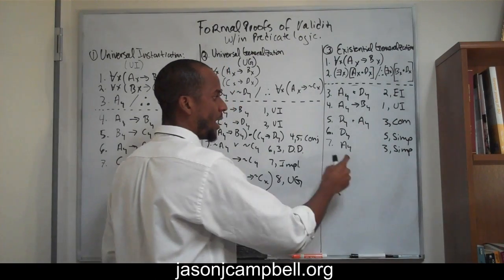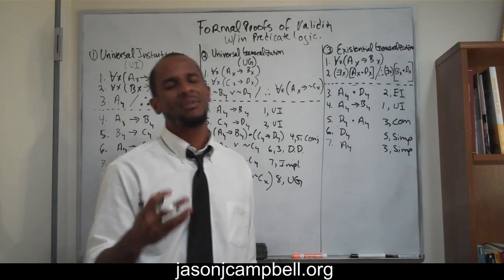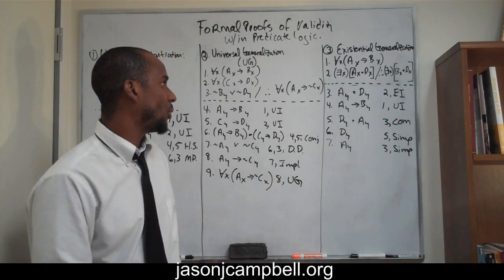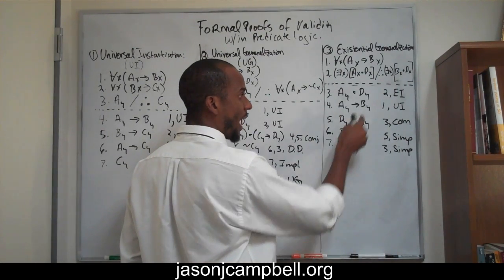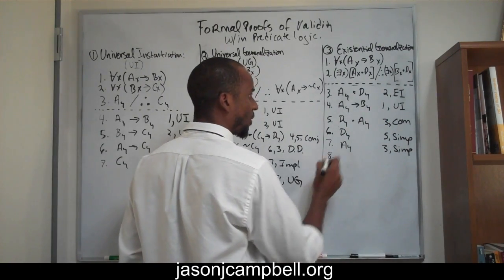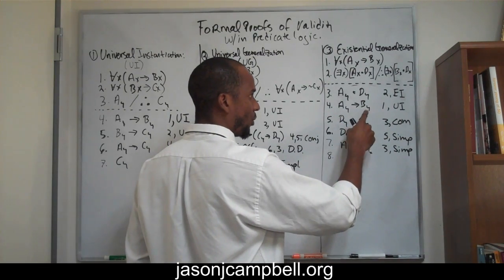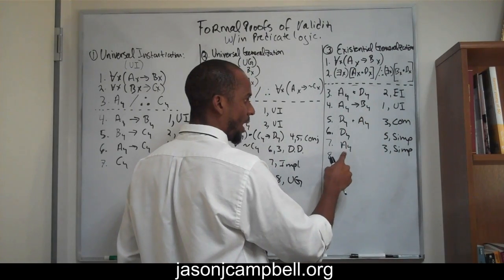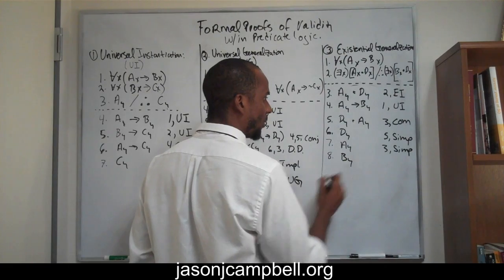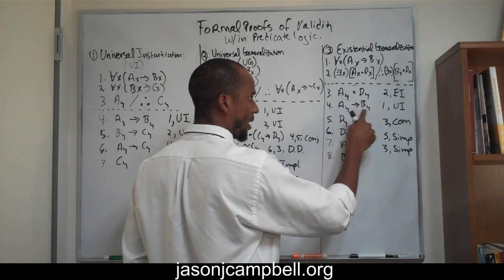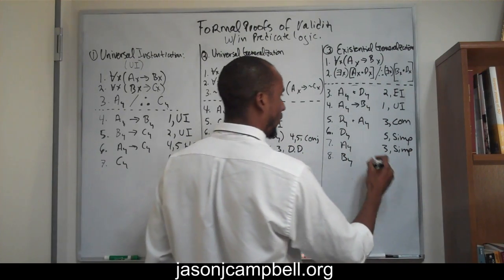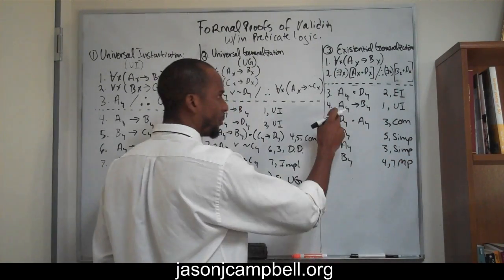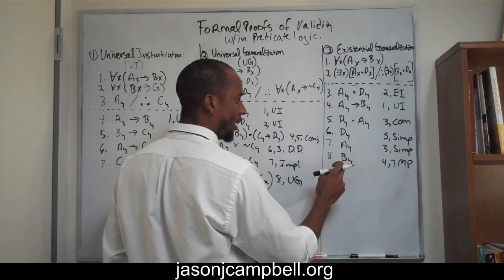So now I have Dy and Ay by themselves. Why is Ay useful? Because by freeing it up, I can now get By — which is what I need. The form is: if P then Q, P, therefore Q — modus ponens. If I jump, I will fall; I jump, therefore I fall. So I can get By from line four and line seven using modus ponens.